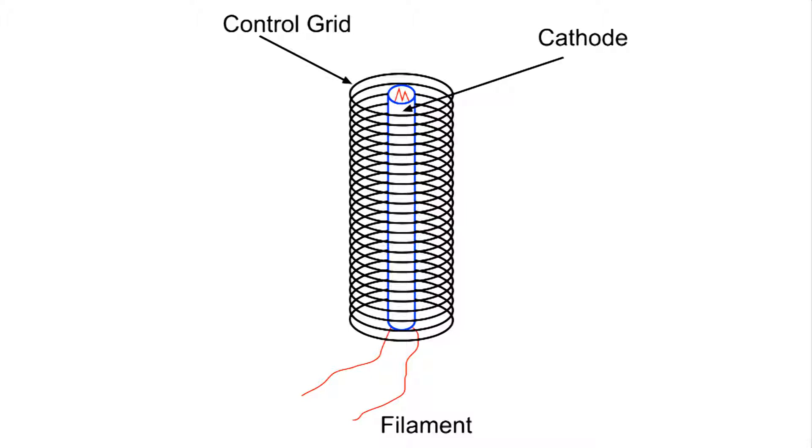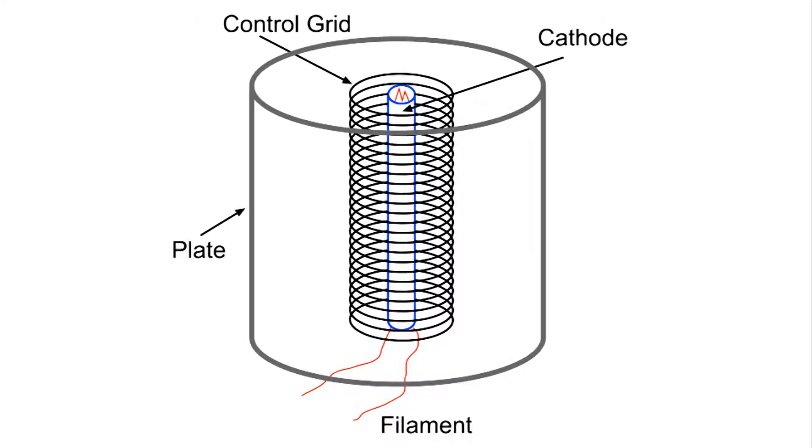Around this cathode and filament is the control grid, and this control grid is what's going to control the electrons coming off of the cathode and headed toward the positive plate. Now I'm not going to show the glass envelope that keeps this in a high vacuum, and also I'm going to drop the filament because the cathode has got to be heated to the proper temperature to work.